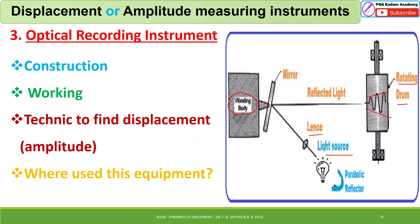Such instruments have the advantage of a wide range of frequency measurement because of their low mass and negligible inertia. Since inertia effects are minimal, the optical recording instrument can be used across a broad frequency range.